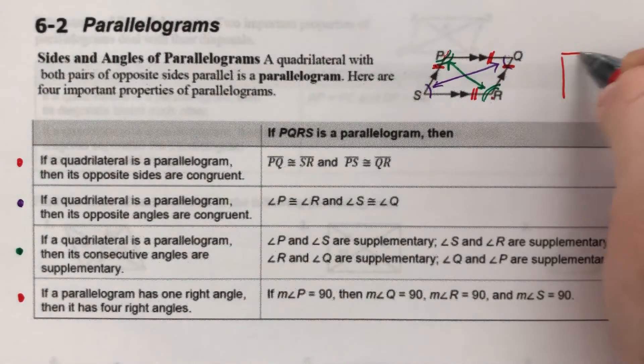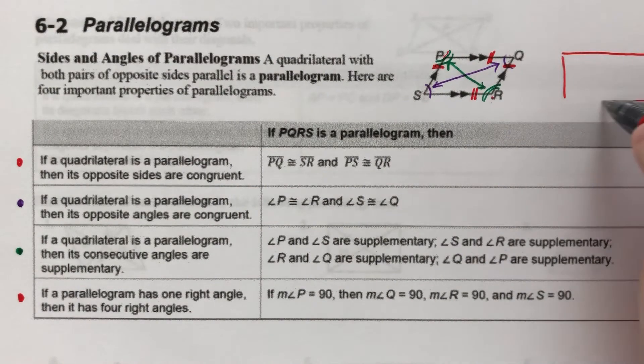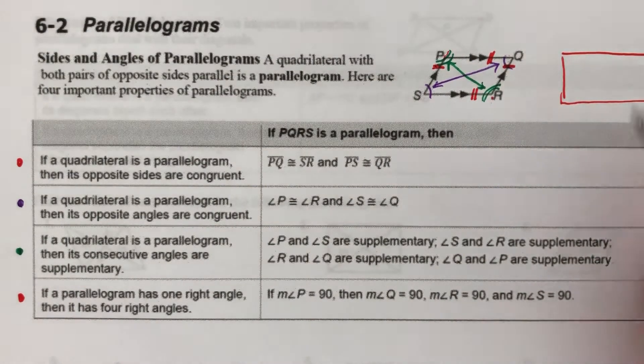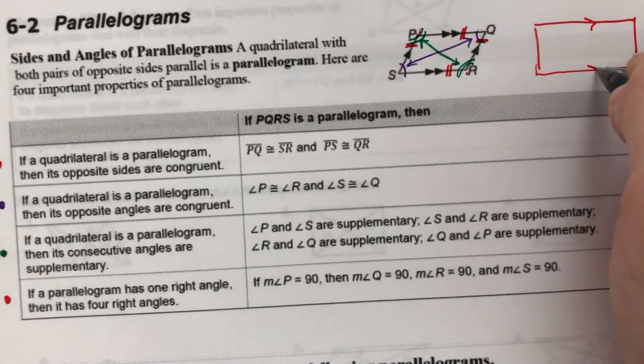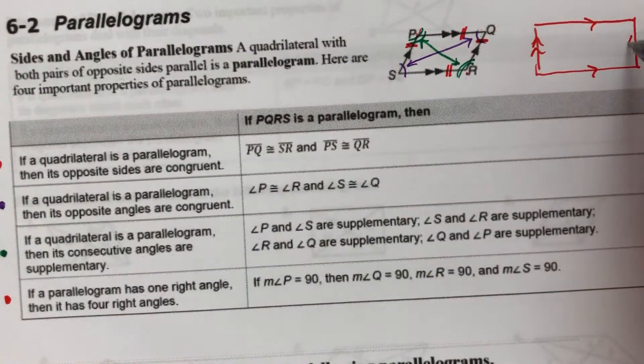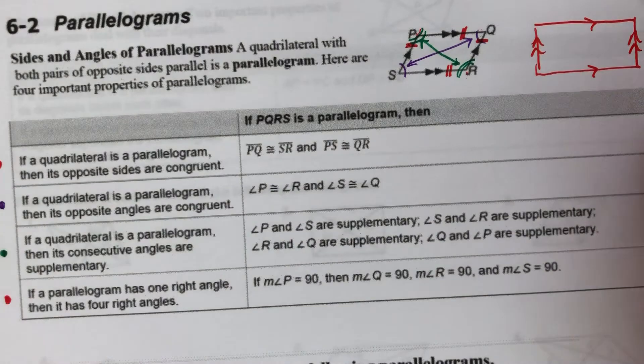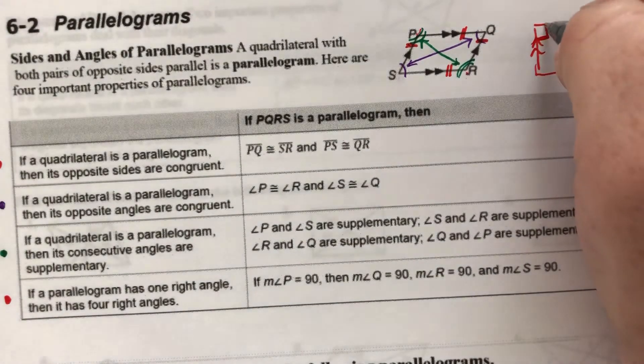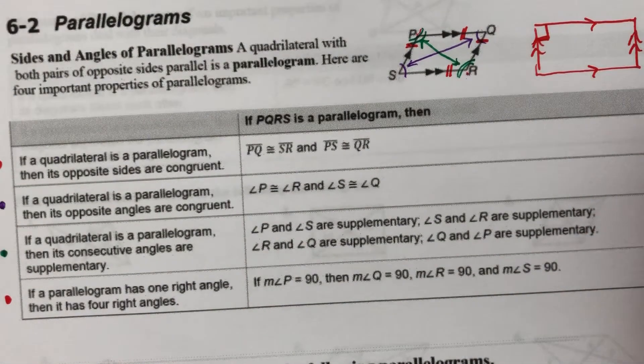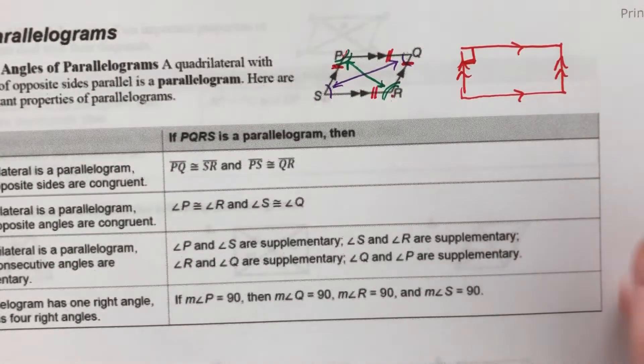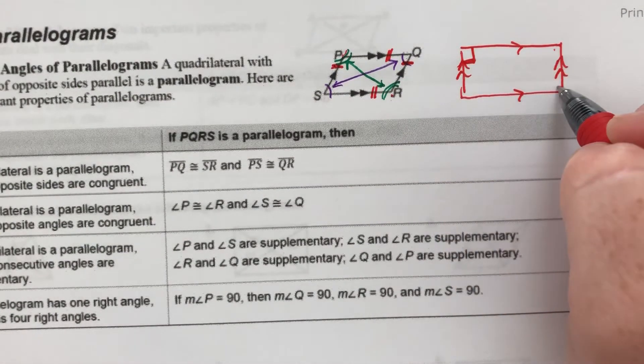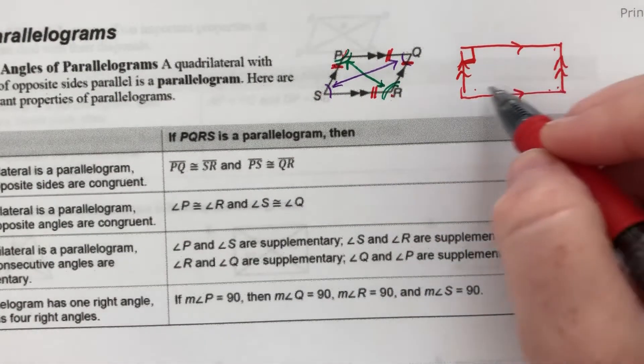So if I have this guy right here, and the first thing I know is that this side is parallel to this side, and this side is parallel to this side, and then I tell you that this is a 90 degree angle, I automatically know that these other three angles have to be 90 degrees as well.